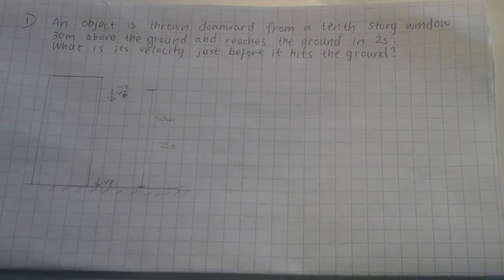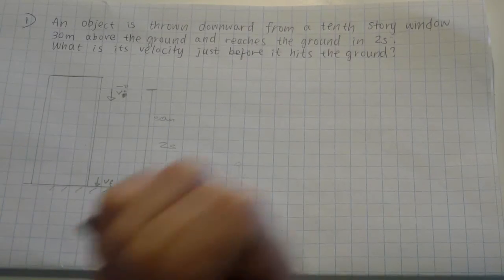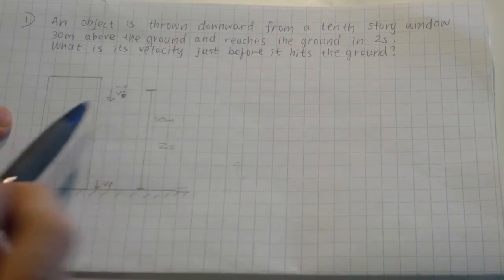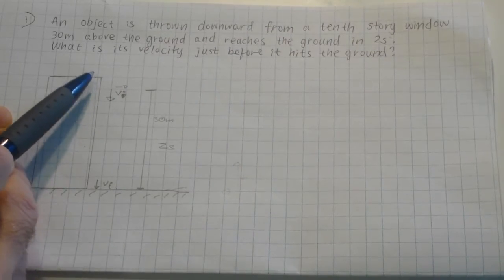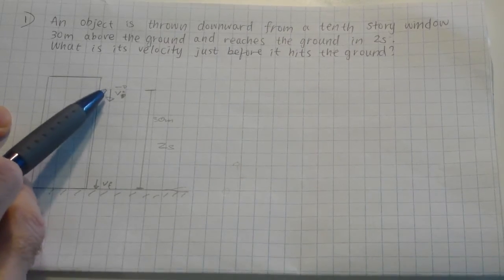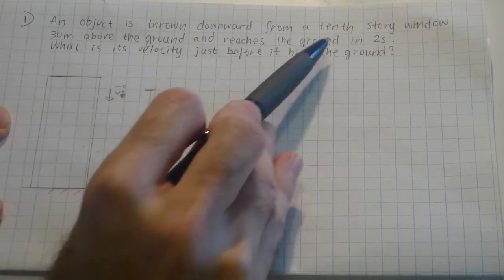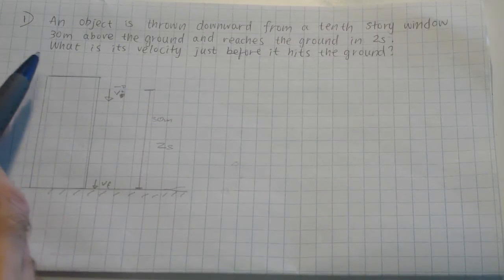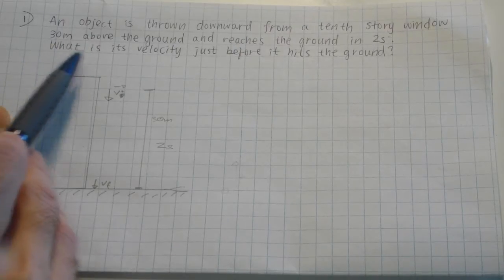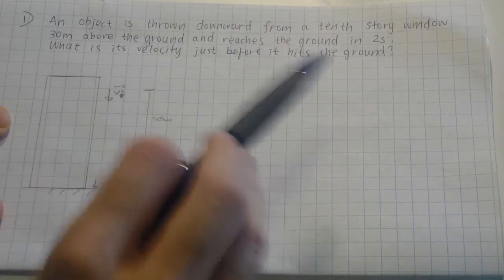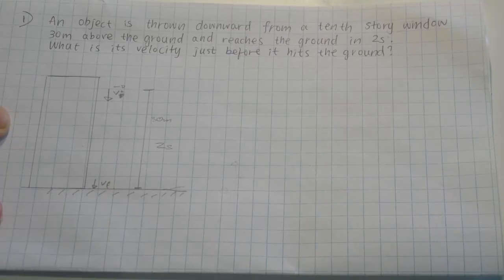In this question, we have an object that is thrown downward from a 10-story building, 30 meters above ground, and reaches the ground in 2 seconds. The question is: what velocity does it have just before it hits the ground?